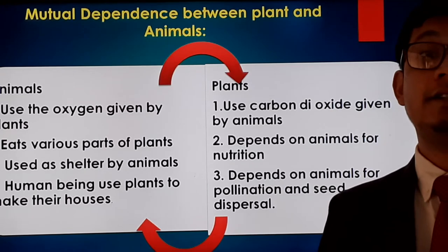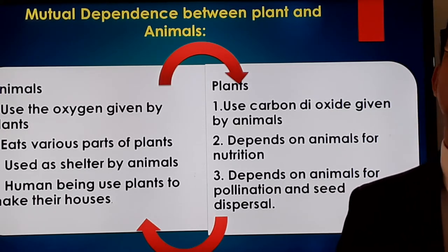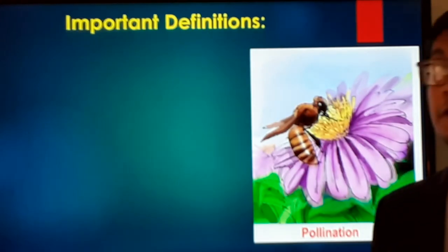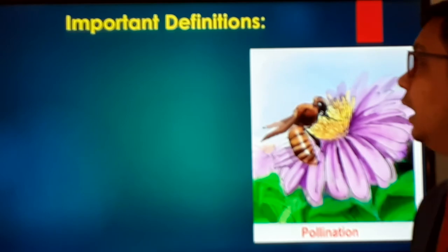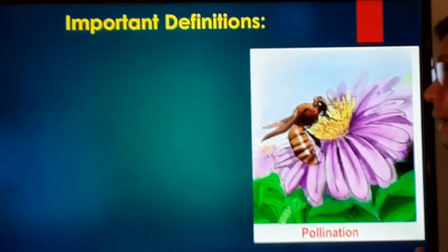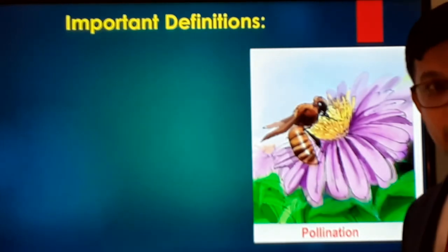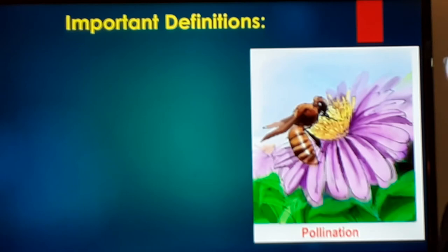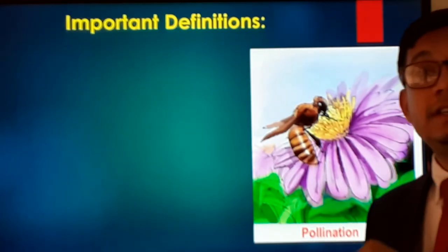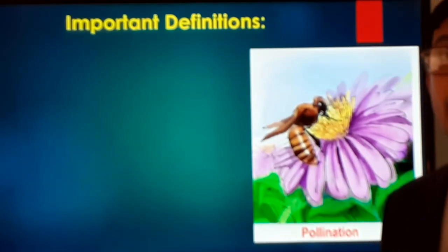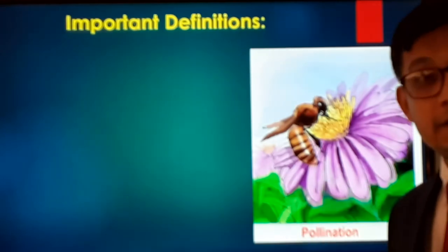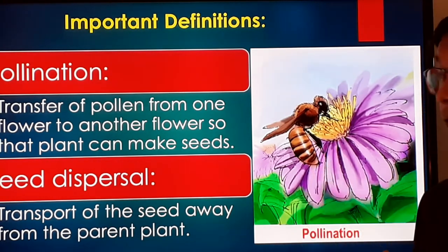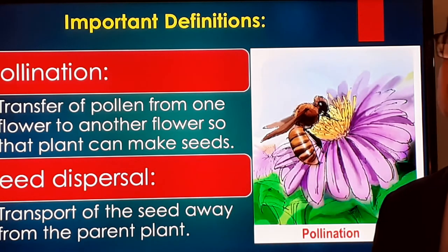Let's learn what pollination and seed dispersal are — these definitions are very important for your PEC examination. In this picture, you can see a flower and a bee. The bee takes pollen from one flower and carries it to different flowers. The pollen is thus transferred from one flower to another, and that process is known as pollination. So pollination is the transfer of pollen from one flower to another so that the plant can make new seeds.